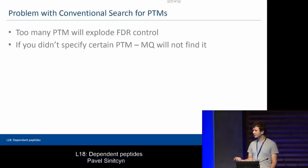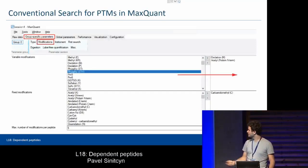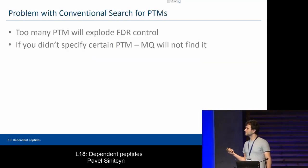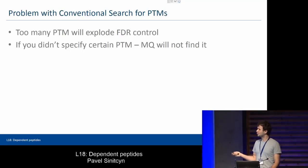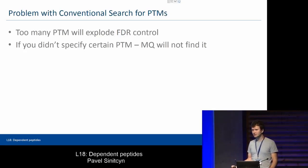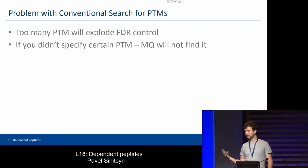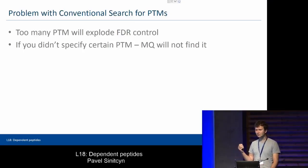You may have heard the frequent discussion: what does 'too many PTMs' mean? If you add all described PTMs it would be a lot. The common answer is that too many PTMs will cause FDR control to explode and take a lot of time — better not to do this. But the problem is that if you didn't specify a certain PTM, MaxQuant will not find it. MaxQuant is a database-oriented method — if you include something in the database you can match against it, but if you didn't include it, in the worst case it will be a false positive.